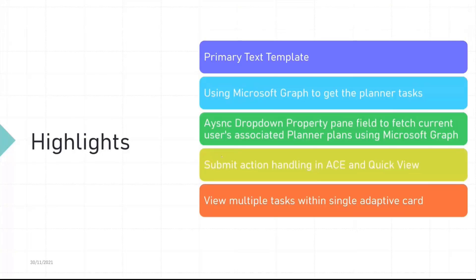The highlights of this demo: I'm using a primary text template, I'm using Microsoft Graph to get all my planner tasks, I'm using an async drop-down property pane to display all the plans I'm associated with, and based on whichever plan and task you click on, you go into detail with the ability to navigate into the planner for that specific task.